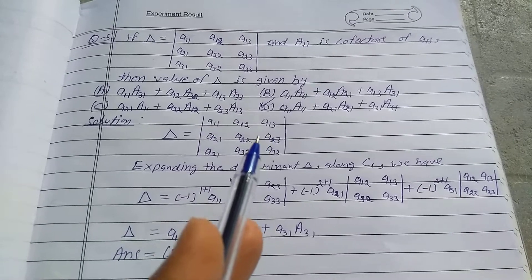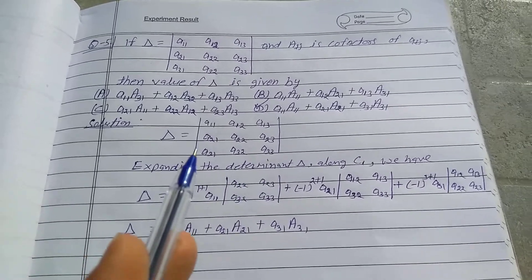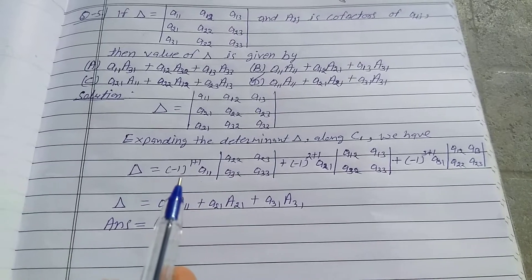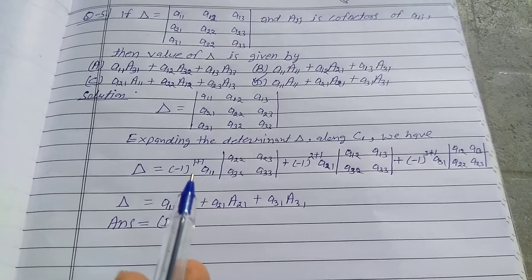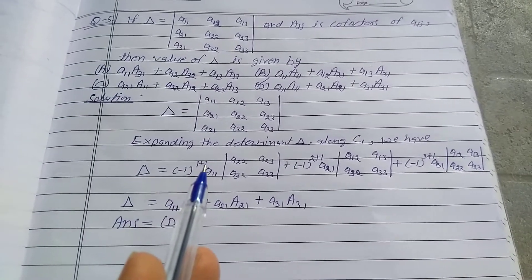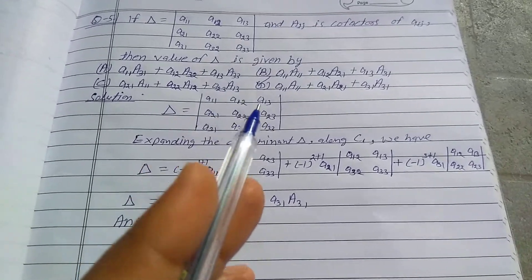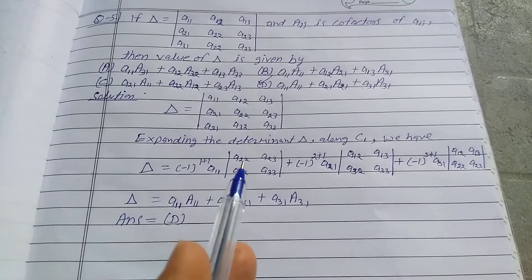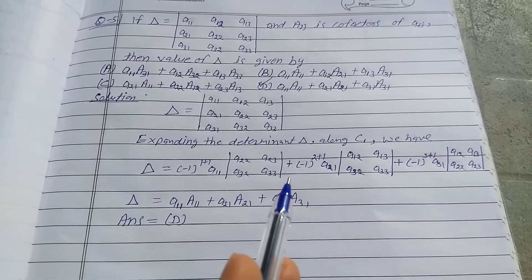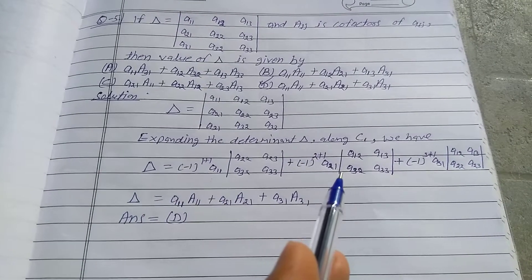Expanding the determinant delta along C1 (first column), we have: delta equals (-1)^(1+1) · a11 · determinant of a22, a23, a32, a33, plus (-1)^(2+1) · a21 · determinant of a12, a13, a32, a33.